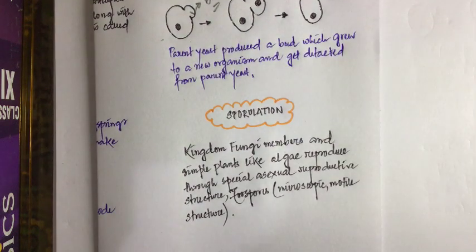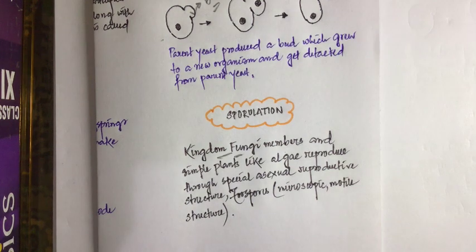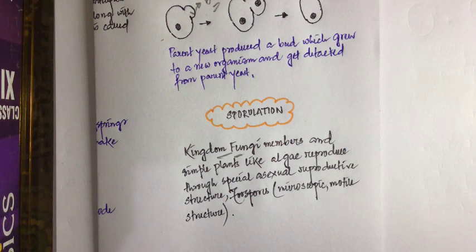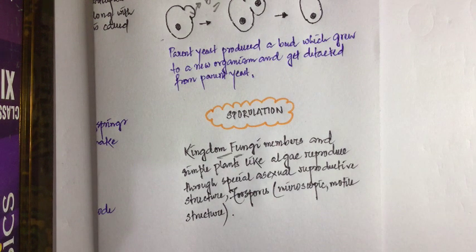The final type is sporulation. You can find the similarity with the word 'spores' — these organisms produce spores, and from these spores new organisms are formed. Examples include members of the kingdom Fungi and some small plants like algae, which reproduce by sporulation. The spores produced are called zoospores — microscopic motile structures that can move around and produce a new organism when conditions are favorable.